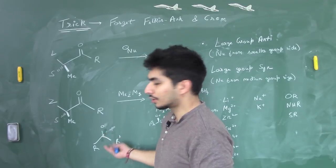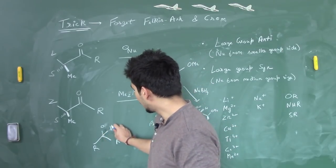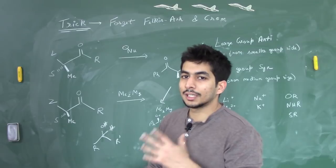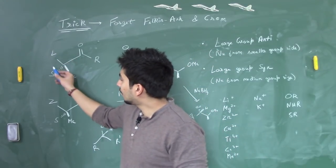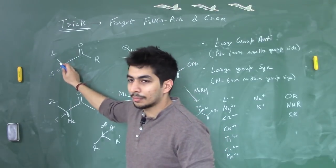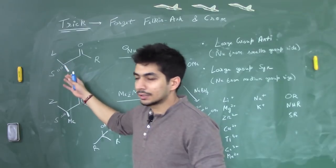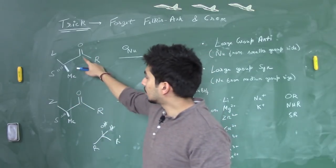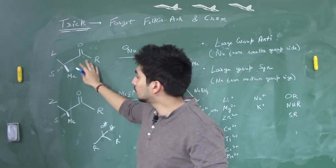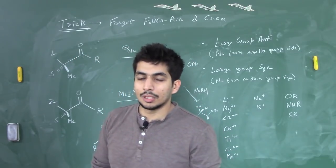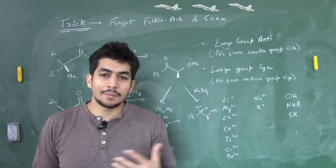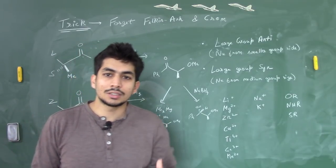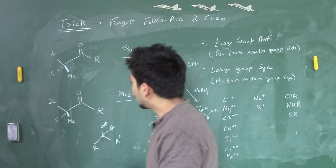When reduction takes place and hydrogen is added, we get an alcohol. The stereochemistry can be above or below the plane, giving a racemic mixture. However, if there is a chiral center adjacent to our pro-chiral center, it was observed that instead of a racemic mixture, some selectivity is obtained. This selectivity is explained by the Felkin-Anh model and Cram's model.